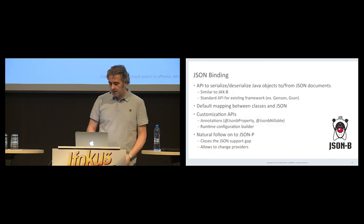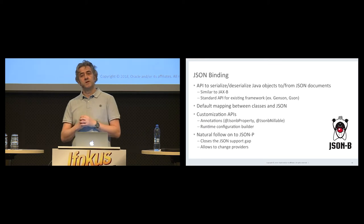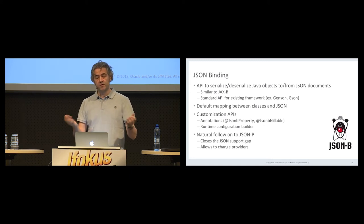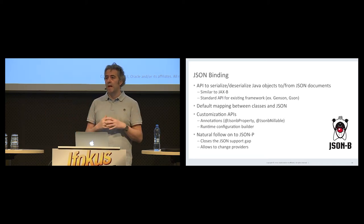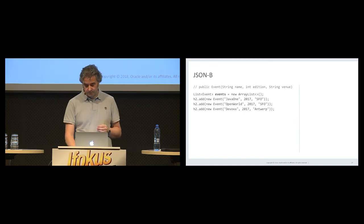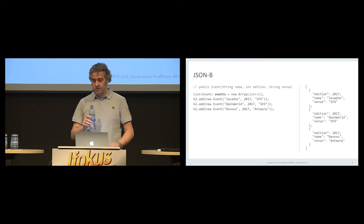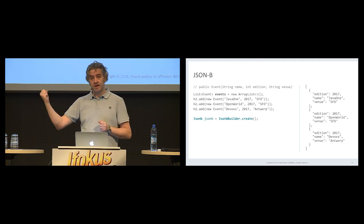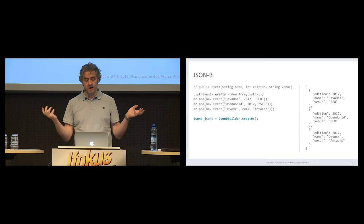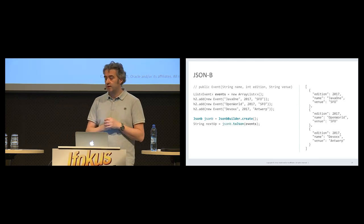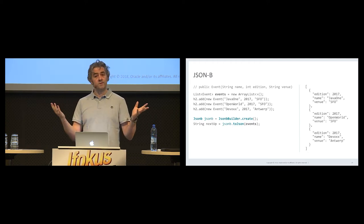More importantly, what we're doing on the JSON front is adding a new API that will do the marshaling and unmarshaling from Java objects to and from JSON documents — JSON-B. The specification defines the default behavior, and obviously you as a developer have the ability to override it. Here's an example: we have a POJO — a list of events — and we want to turn it into a JSON document. First we need a JSONB object: Jsonb.builder().create() with no configuration gives us the default behavior. Then we use the toJson method, pass it our Java object, and get back a String containing the JSON representation.